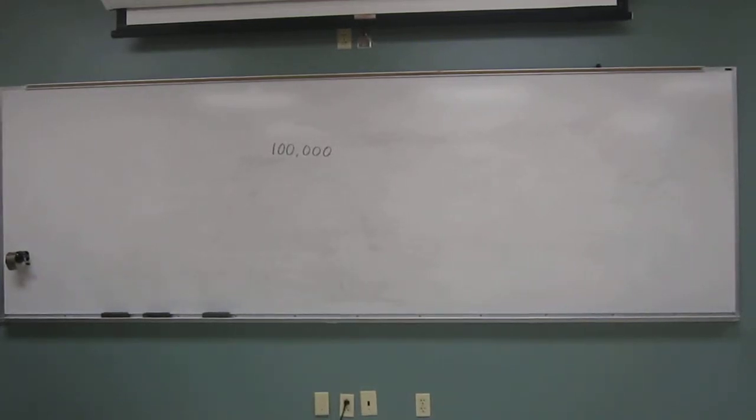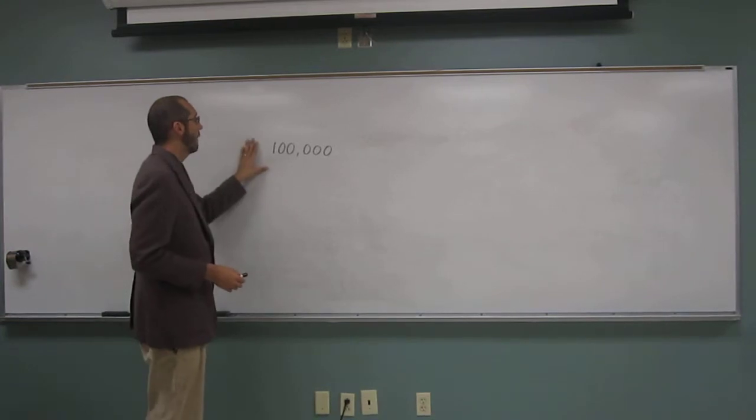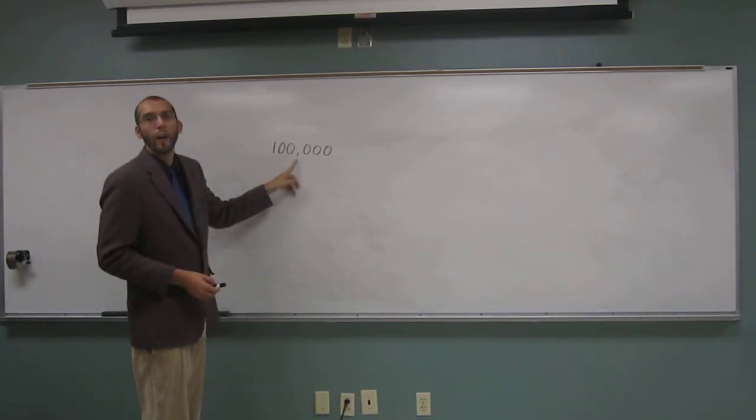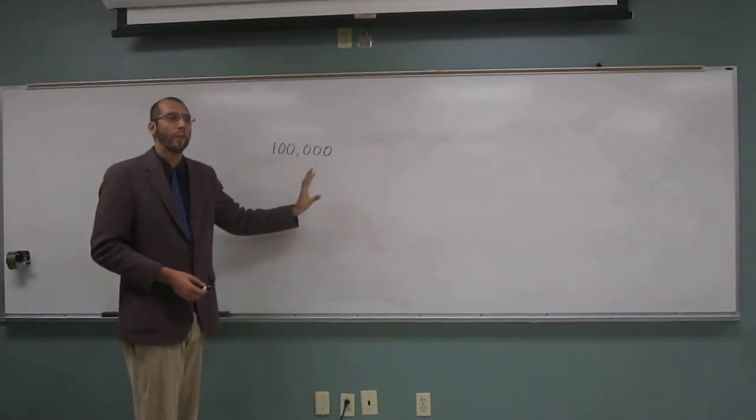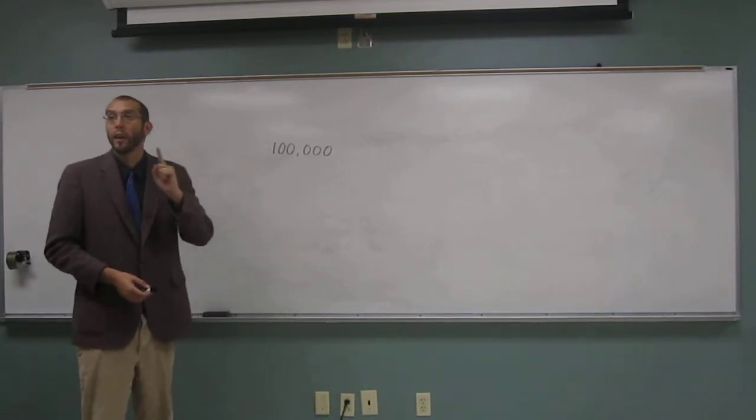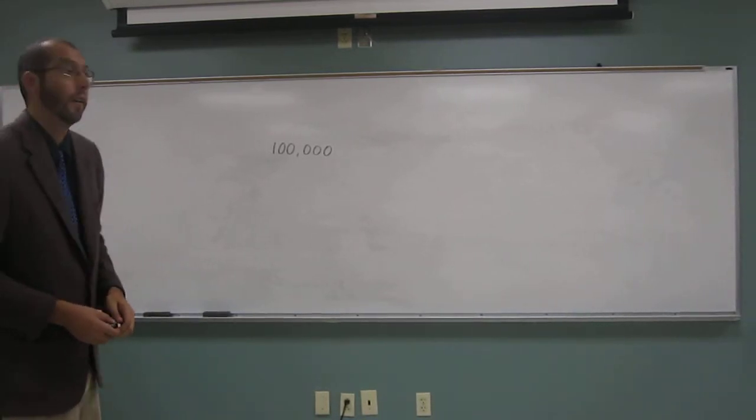Let's do our first scientific notation problem of the day. We look at this, and this is a comma, not a decimal point. So how many significant digits does this number have? One. Just one. You guys have to watch out about that. Those trailing zeros really kind of screw people up a lot.